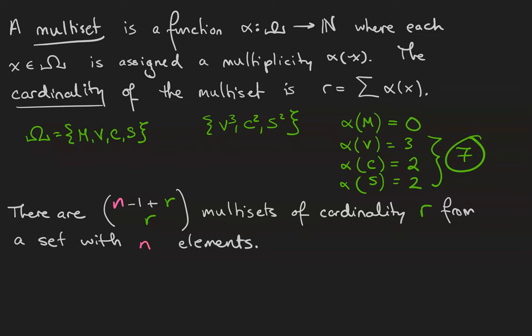In general, there are n minus one plus r choose r multisets of cardinality r from a universe of n elements. Notice the minus one in the binomial coefficient is because there is one fewer dividers than elements of the universe.